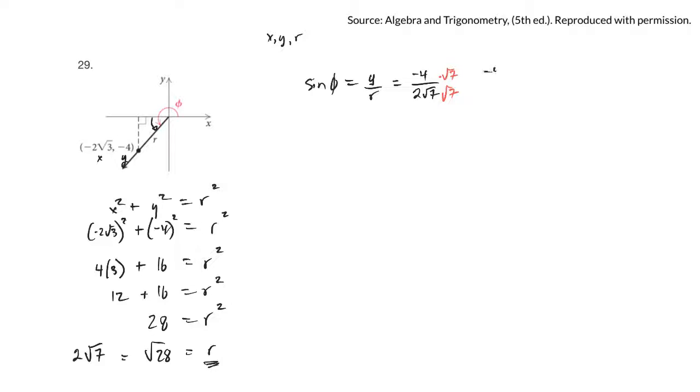So we can multiply top and bottom by root 7. We'll get negative 4 root 7 over 2 times 7. This 2 will go into this 4 twice, so I would write it as negative 2 root 7 over 7. That's what sine would be.